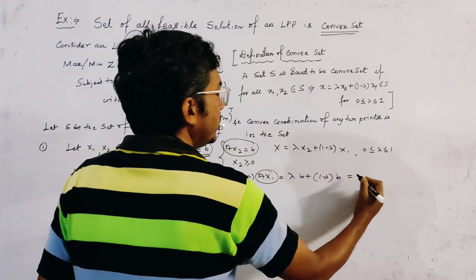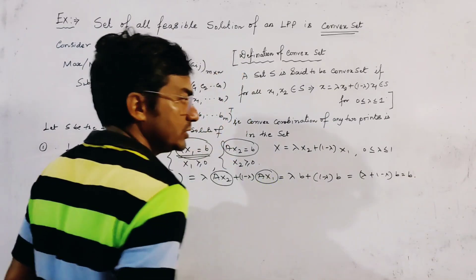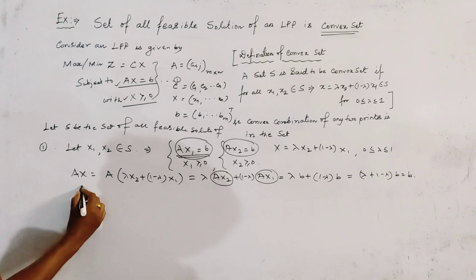So, we take common B, lambda plus 1 minus lambda, equal to B. That is B. So, we get the first condition, this is equal to A, X, equal to B.